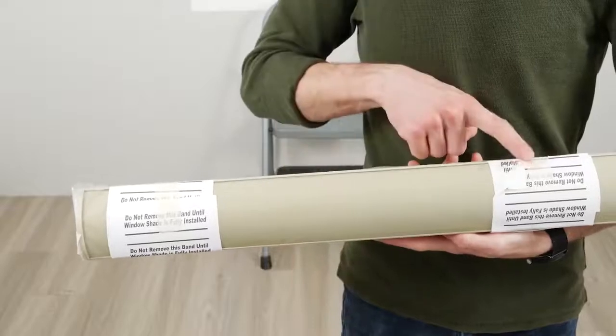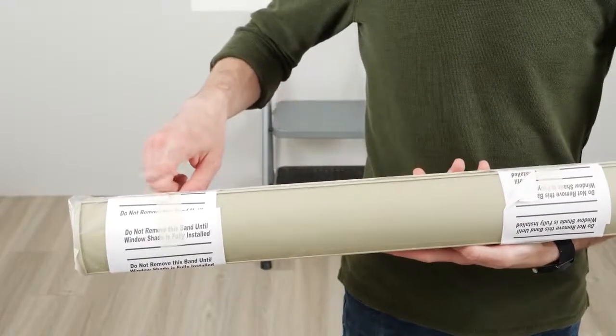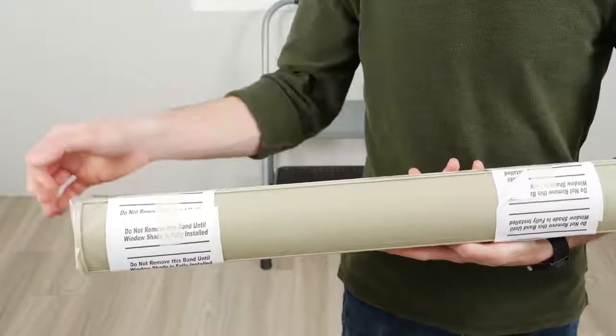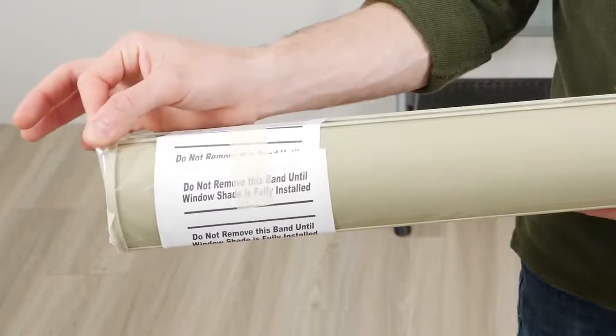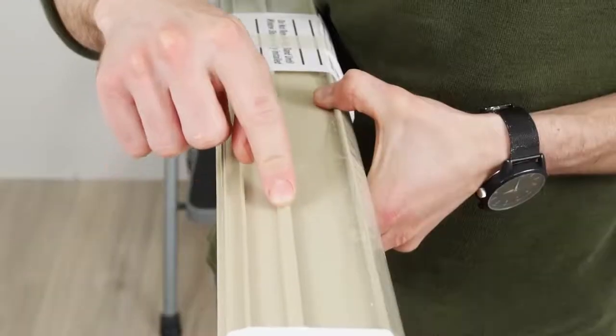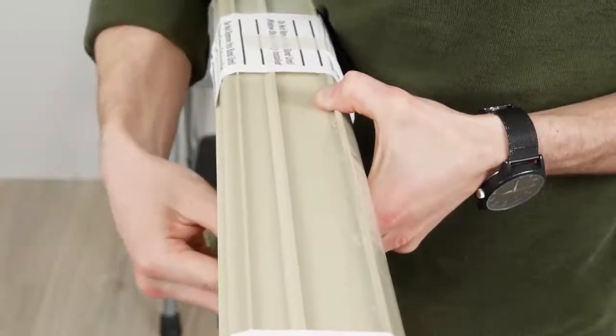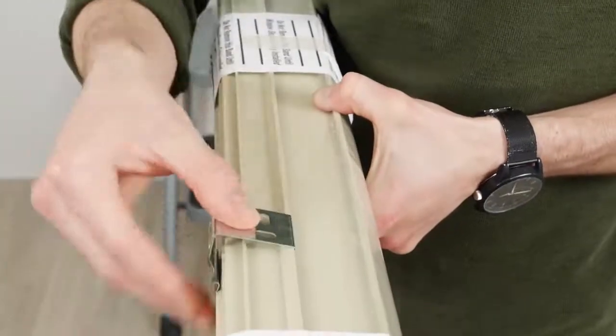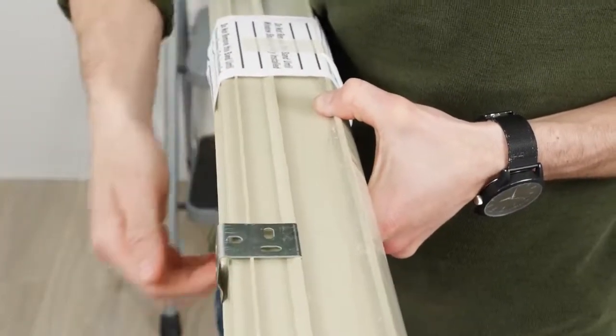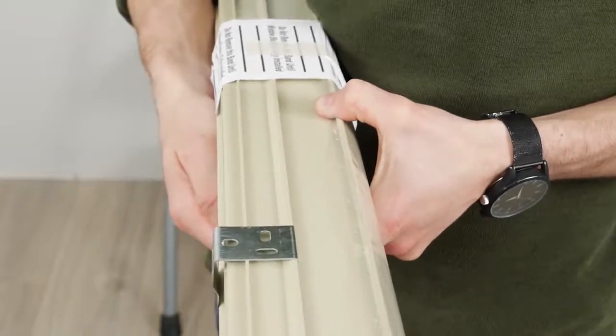If your shade came with these paper bands wrapped around it, leave them in place until the shade is installed. The same rule applies for the protective film covering the cassette. See these grooves on the top of the cassette? That's what the brackets latch onto to hold the shade in place. Refer to your installation manual if yours looks a little different.